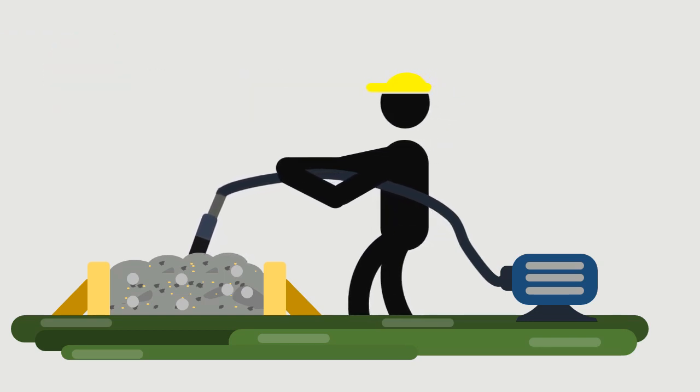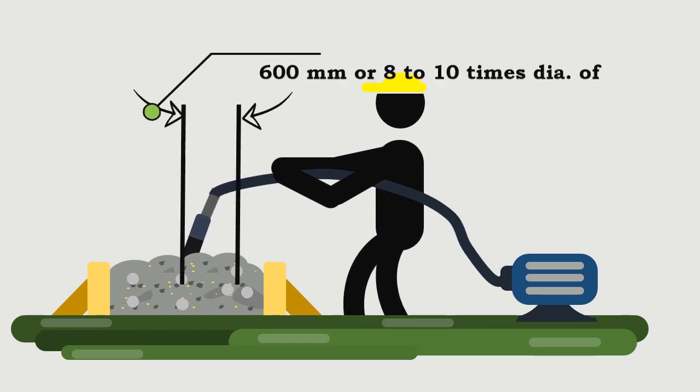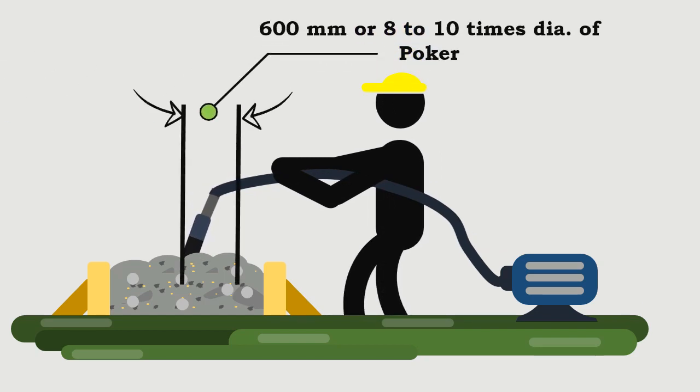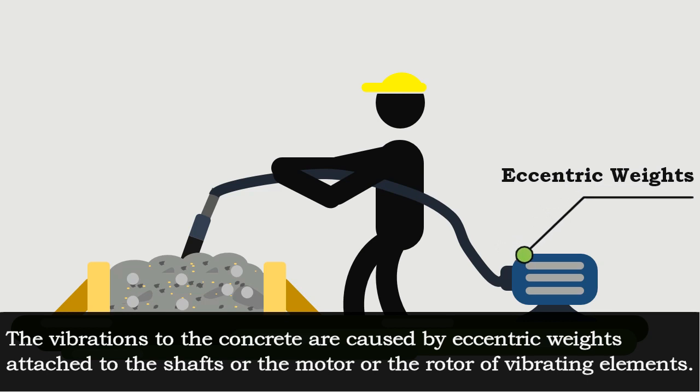The vibrator needle is inserted at a spacing of 600 millimeters, or 8 to 10 times the diameter of the poker. The vibrations to the concrete are caused by eccentric weights attached to the shaft, motor, or rotor of the vibrating elements.